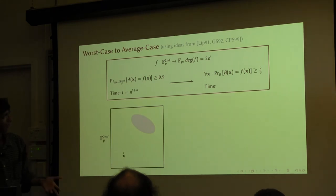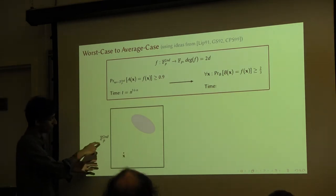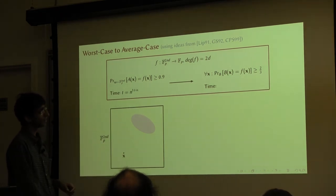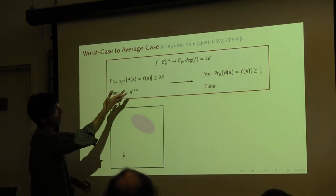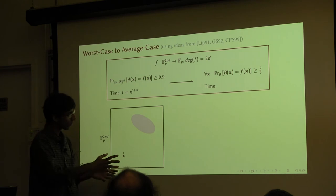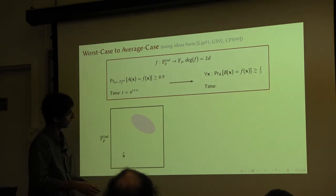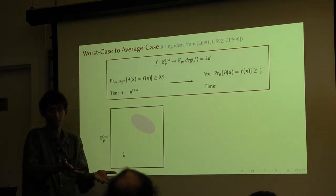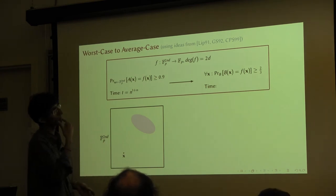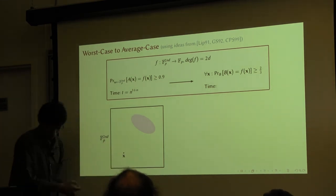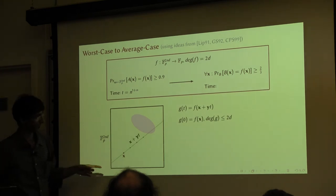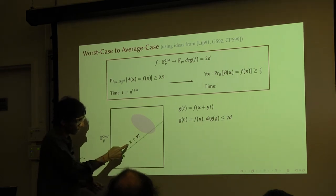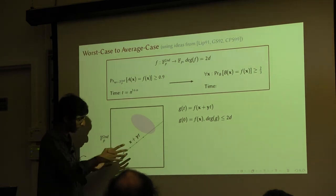B gets as input an x from the space F_p to the 2nD. B has access to A, which claims to be correct on 90% of the instances — it is wrong on certain instances. B does not know where the bad instances are. What B does is: it takes this input and picks a random line through its input in the space. It picks a random Y in the space and considers the line x plus Y times t — a random line in the space that passes through x.